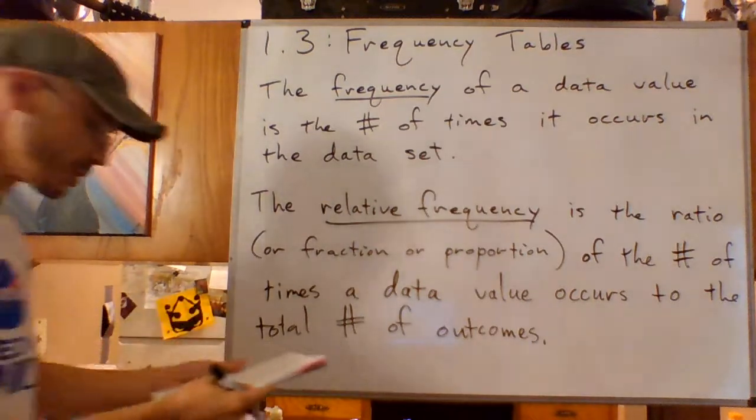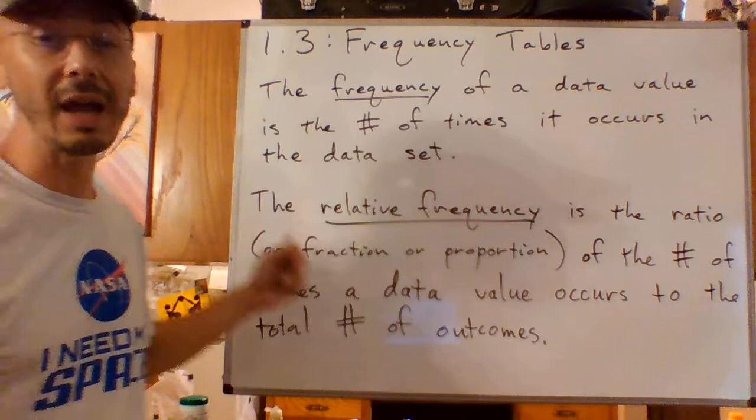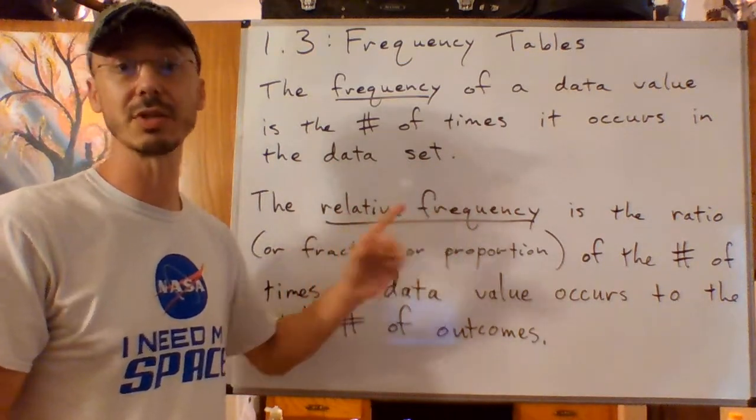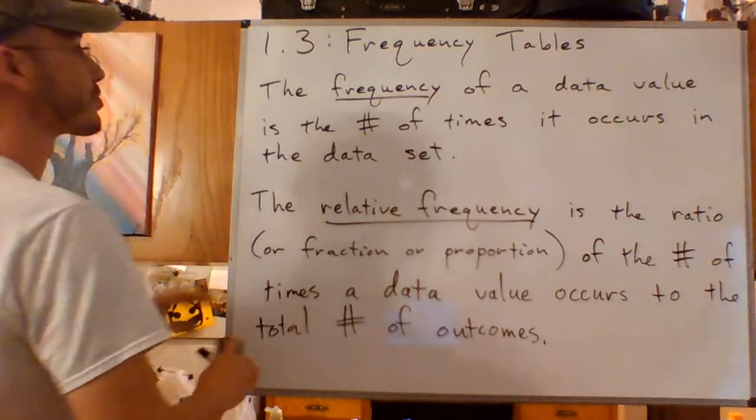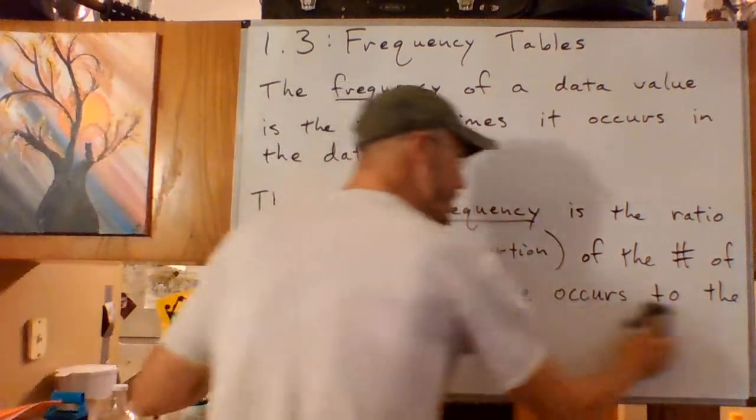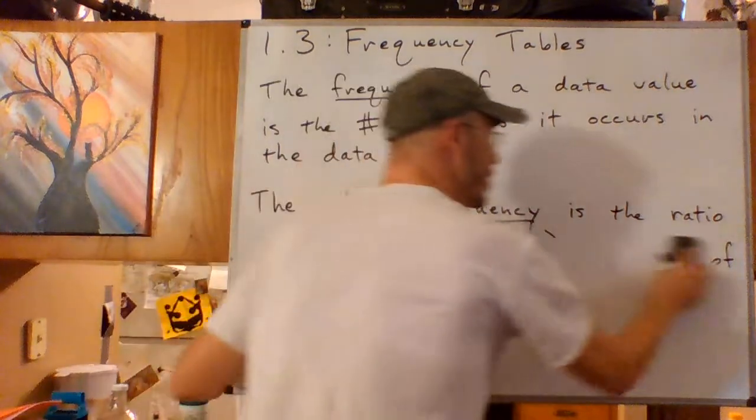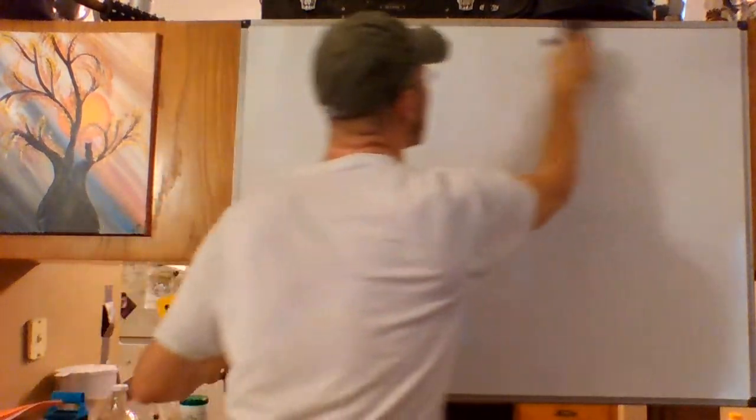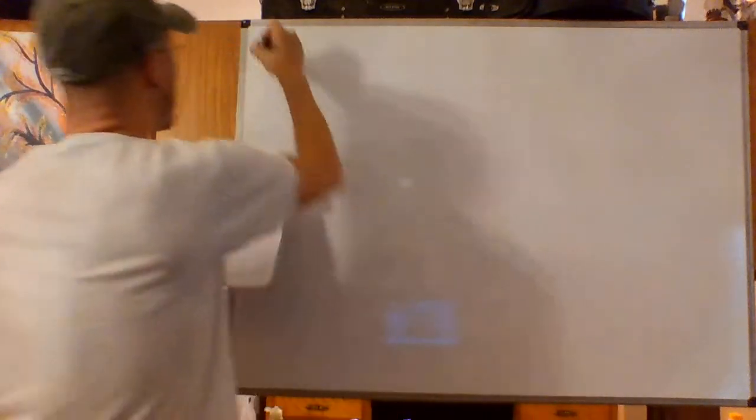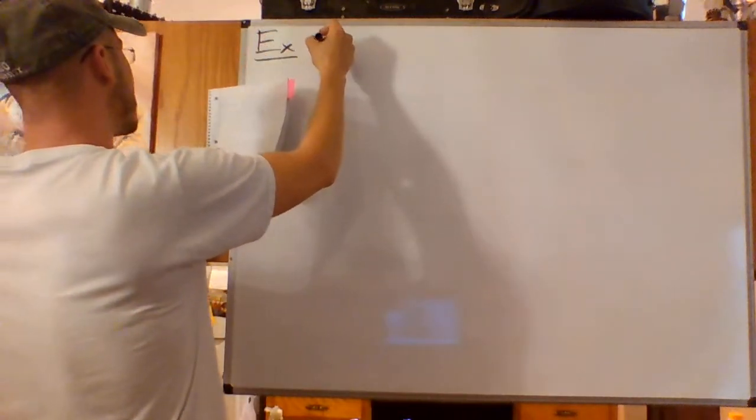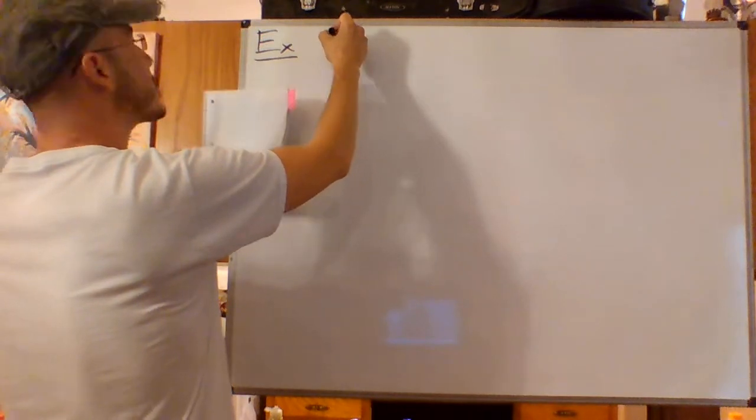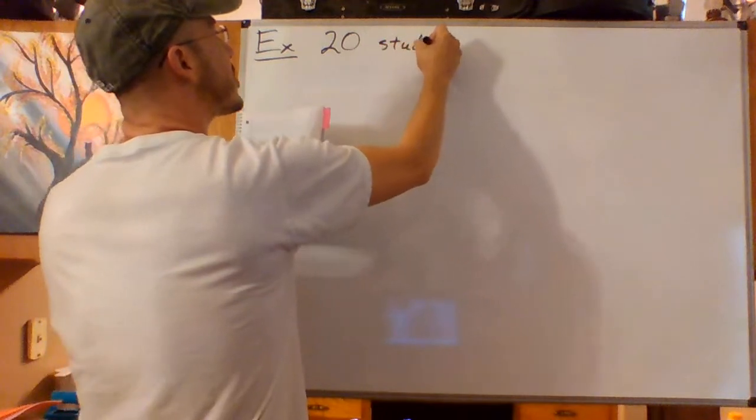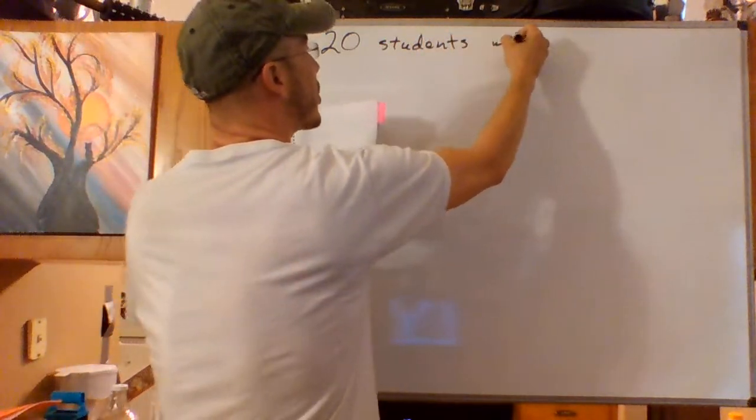So I've got an example to demonstrate both of these and one additional type of frequency, the cumulative relative frequency. We'll do that toward the end, but I've got an example to demonstrate. First of all, frequency. And let me introduce this with just the data.